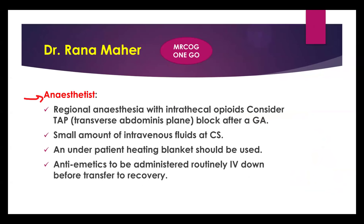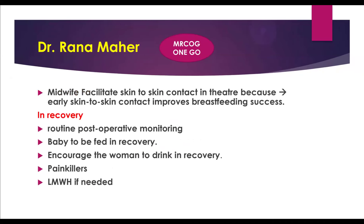The anaesthetist will discuss general versus regional anaesthesia, providing pros and cons of each. If general anaesthesia is used, offer a TAP block afterward. Give a small amount of IV fluids on an individualized basis — keep the patient well-hydrated. Use a heating blanket to keep the patient warm, as hypothermia affects recovery and causes complications. Give IV anti-emetics slowly before transfer to the recovery room.